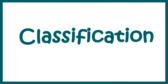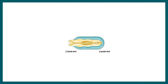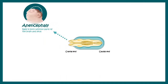Let's talk about the classification of neural tube defects. In a typical neural tube, the cranial end eventually forms the brain and the caudal end is the endpoint of the spinal cord. If the cranial end fails to fuse and close, there are defects like anencephaly, where the baby is born without part of its brain or skull. This is a severe form of defect and the baby does not survive.